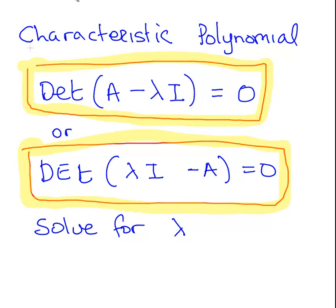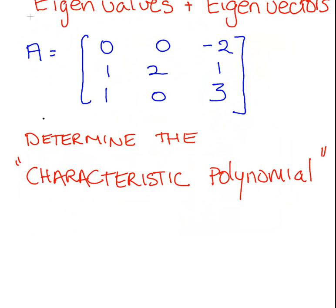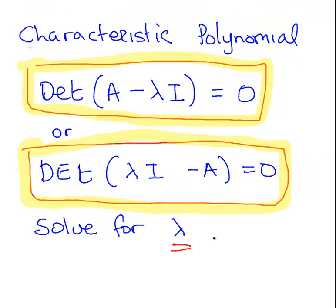Now the idea of a characteristic polynomial is you solve for the values of lambda. So if A here is a 3 by 3 matrix, we should have three possible solutions.